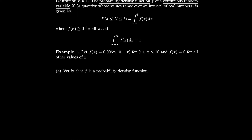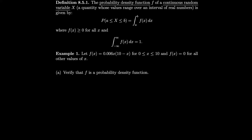In order to be a probability density function, we have to be positive for all values of x. In this case x is between 0 and 10, so that implies that 0.006 times x times (10 minus x) must be positive. So f is positive for all x — we can say f of x is greater than or equal to 0 for all x.